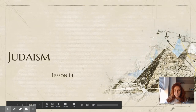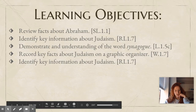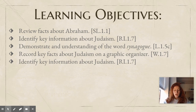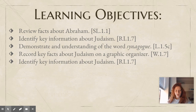First grade, welcome back. It's Ms. Van Wert. Today we are going to read the story called Judaism. Our learning objectives are to review key facts about Abraham, identify key information about Judaism, demonstrate an understanding of the word synagogue, record key facts about Judaism on a graphic organizer, and identify key information about Judaism.